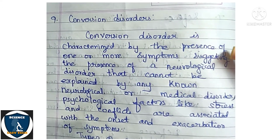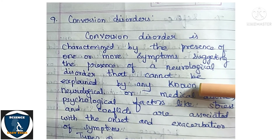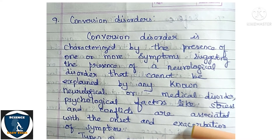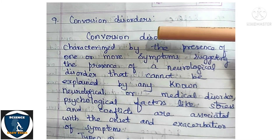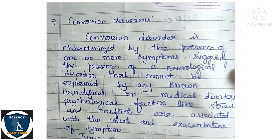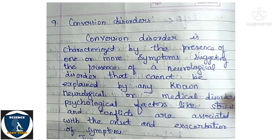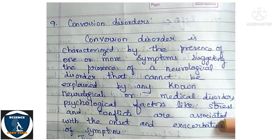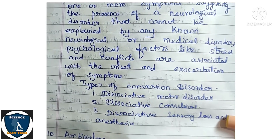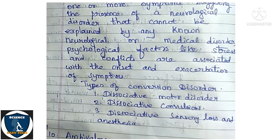Next: Conversion disorder. Conversion disorder is characterized by the presence of one or more symptoms suggesting a neurological disorder that cannot be explained by any known neurological or medical disorder. Psychological factors like stress and conflicts are associated with the onset and exaggeration of symptoms. Types of conversion disorder include: dissociative motor disorder, dissociative convulsions, dissociative sensory loss, and anesthesia.